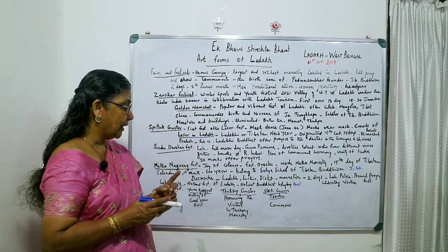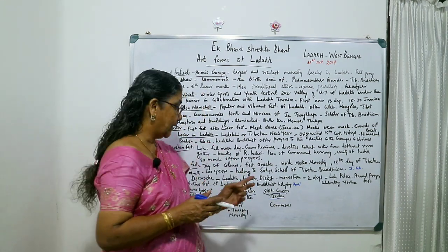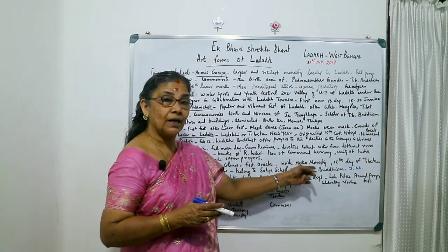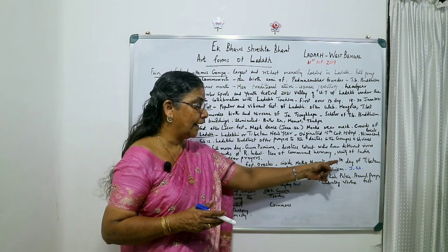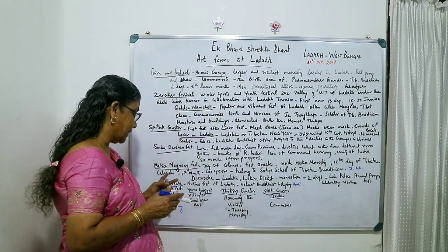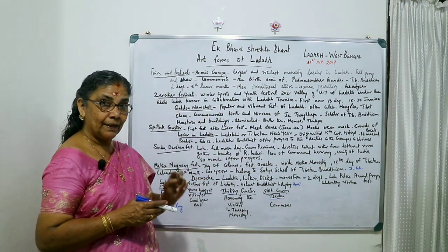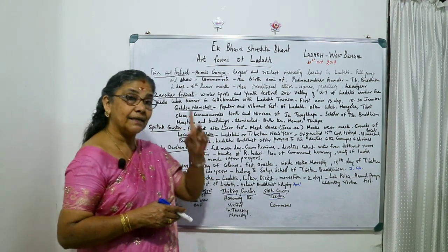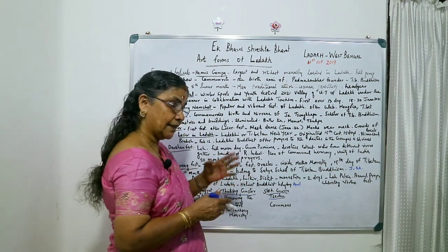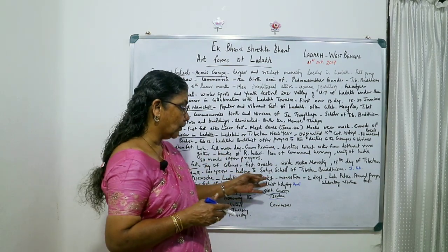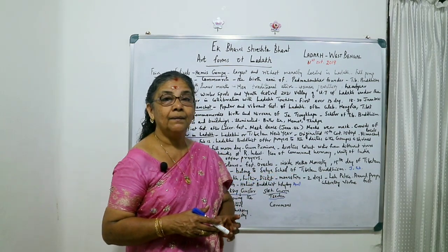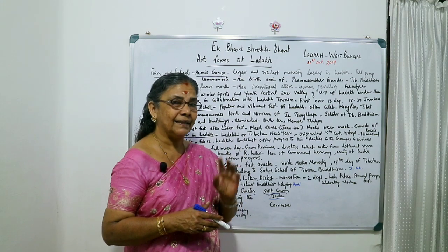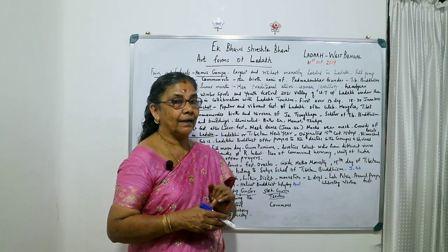Then comes Methu Nangrang festival — it is the joy of the oracles, celebrated inside Methu Monastery on the 15th day of the Tibetan calendar. It has been celebrated for 600 years and belongs to the Sakyam school of Tibetan Buddhism. It comes between January and early February.